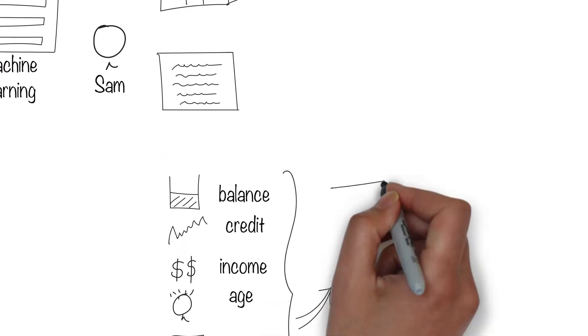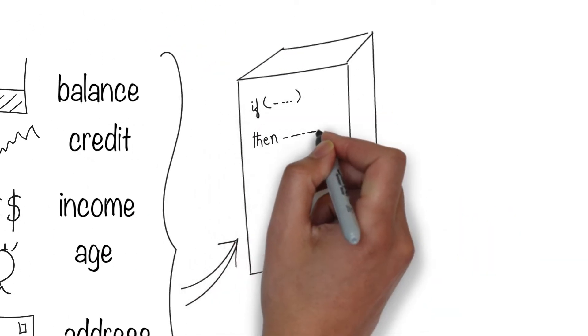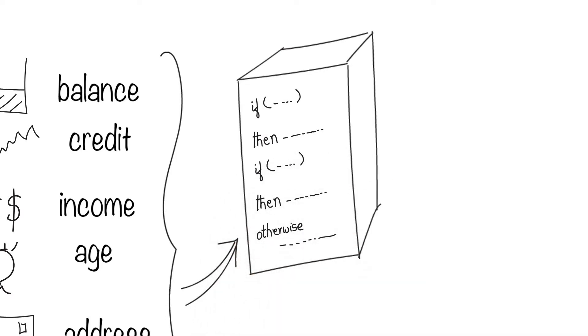This information is fed into a computer that runs it against a bunch of pre-programmed rules and approves or denies Sam's loan.